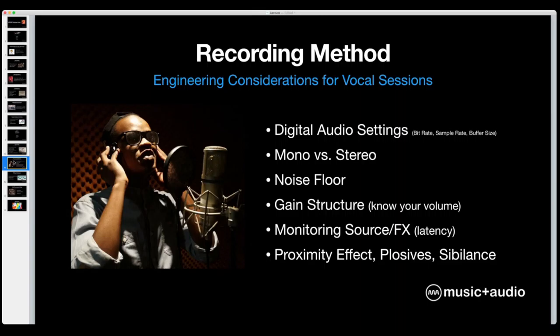Most people these days are recording 24-bit at 48k for most projects. A situation where I will go higher — like 96k or even 192k — is when I intend to do some extreme pitch shifting with that audio. Recording at a higher sample rate gives better fidelity when you do that pitching work after the fact. But for music and most vocal performances, I do 24-48.